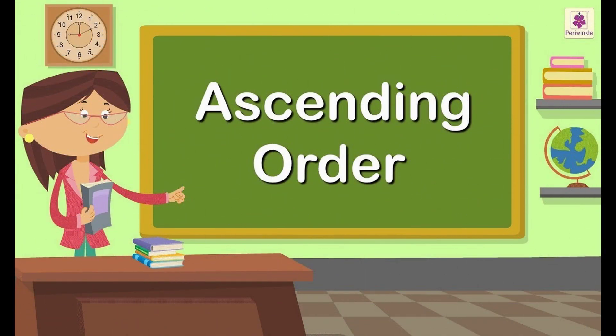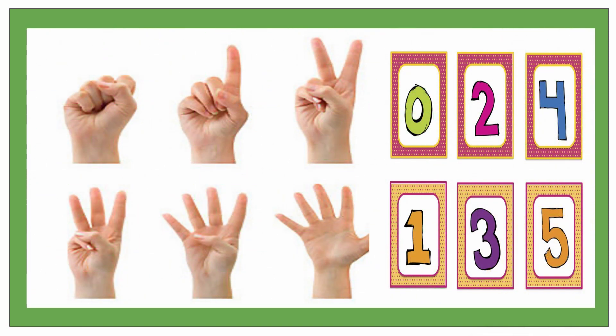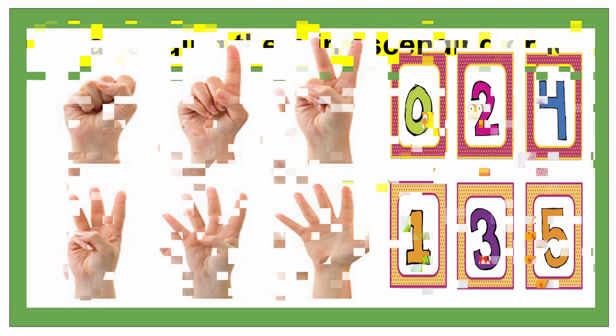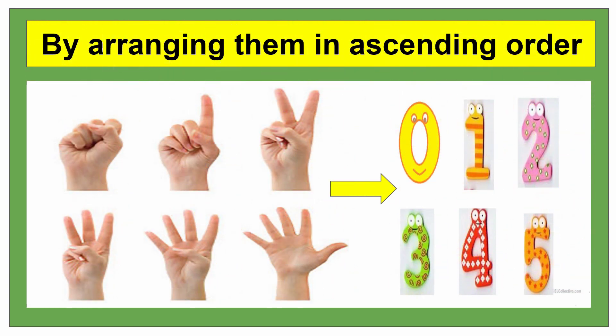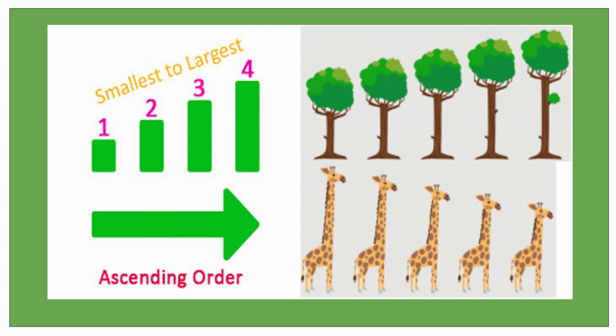Ascending order means small to big. As you can see, 0 to 4 they are in ascending order. By arranging them in ascending order means 0, 1, 2, 3, 4, 5 — smallest to largest.